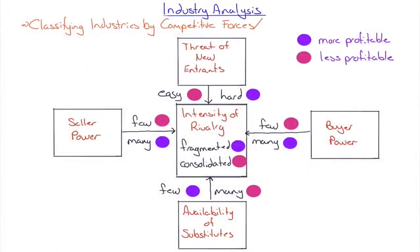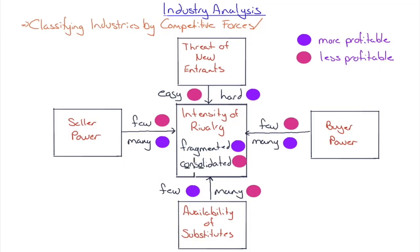Porter's Five Forces model classifies industries by competitive forces, with the intensity of rivalry at the center. Industry profitability is dictated by the interaction of these five forces. Regarding intensity of rivalry: a fragmented industry has many small players, no single price controller, and tends to be more profitable; a consolidated market has two or three big players — an oligopoly — where to gain a new customer you almost have to steal one from a competitor.